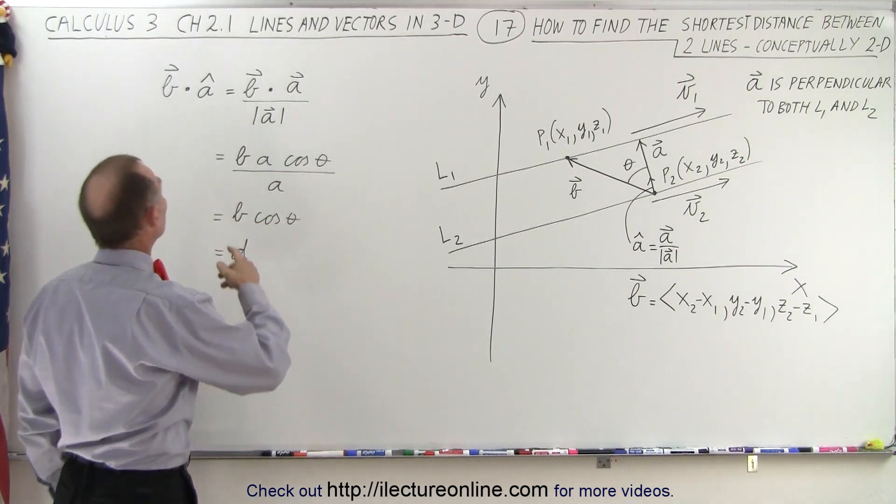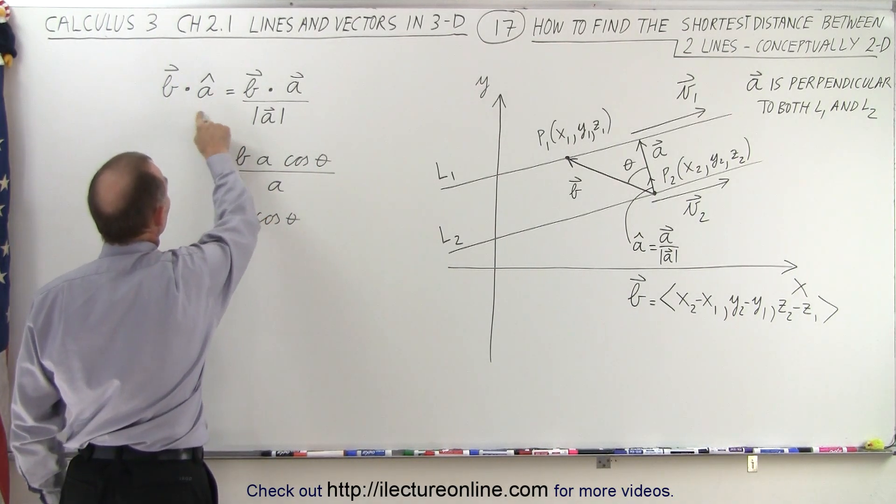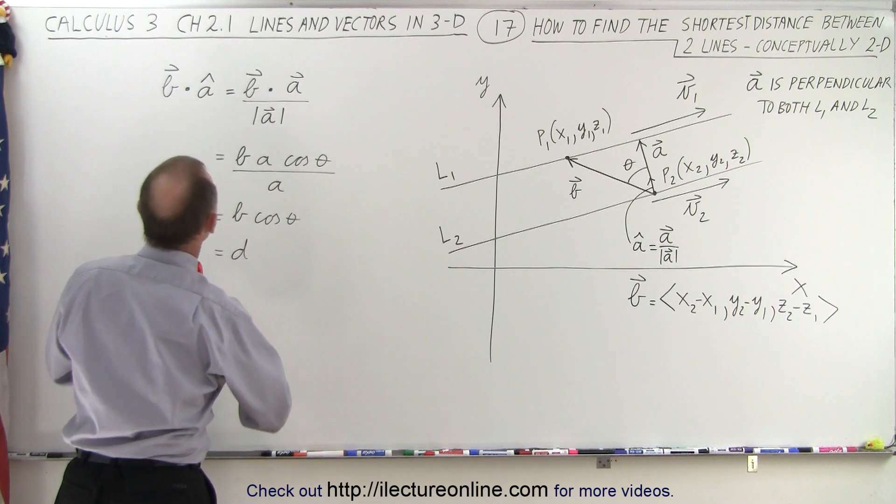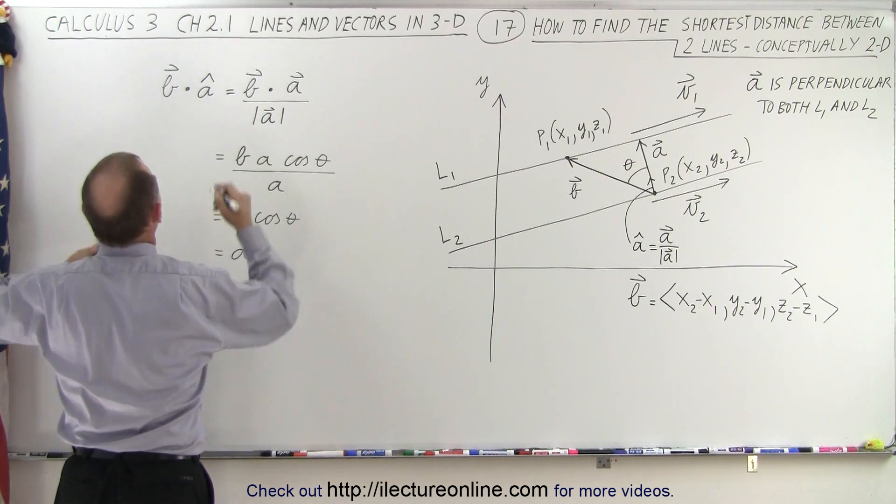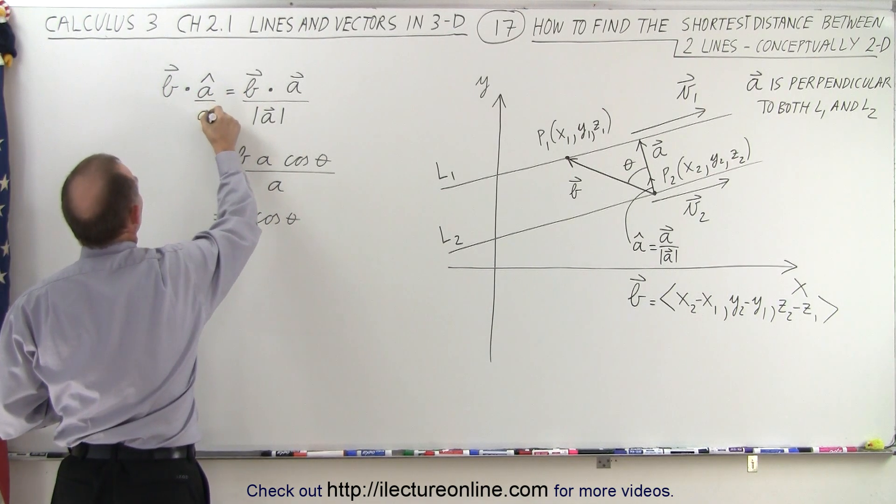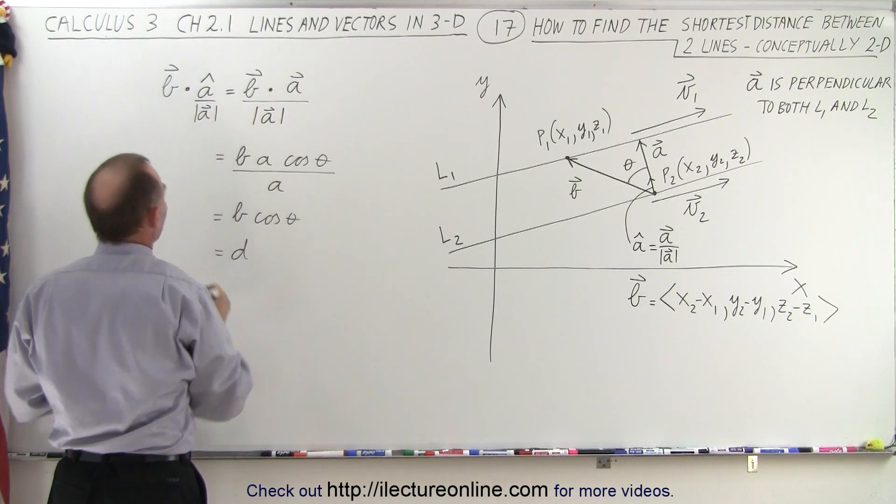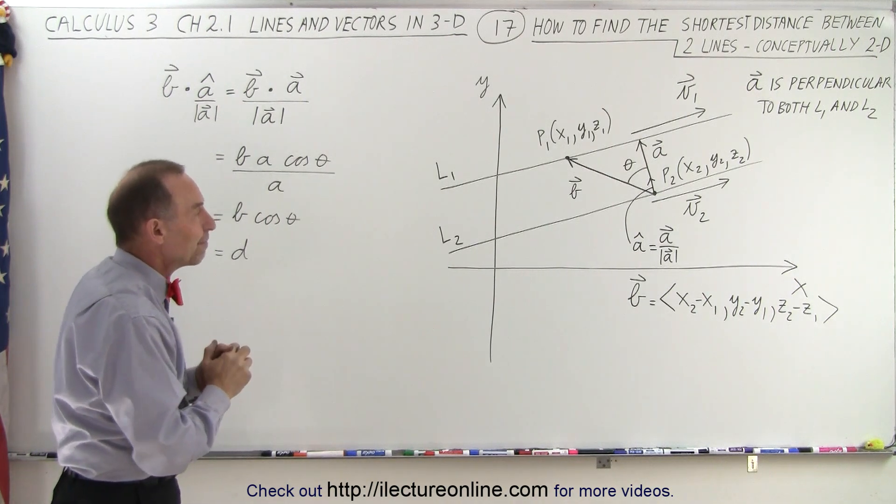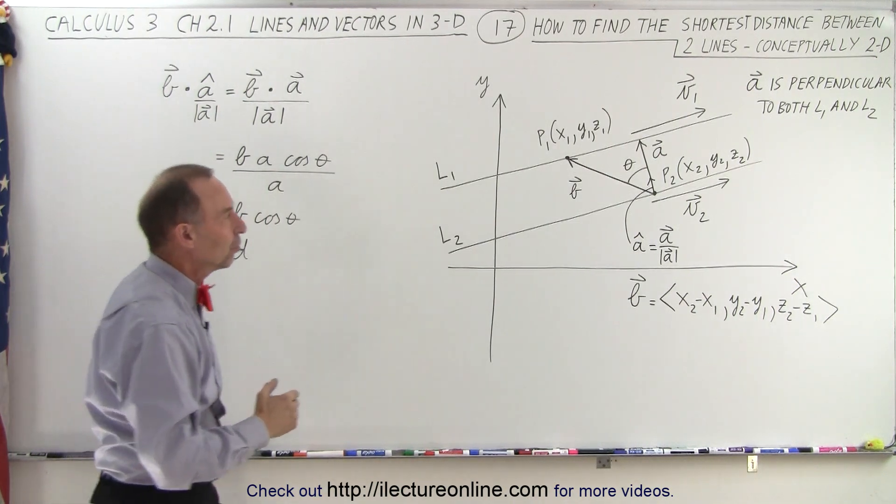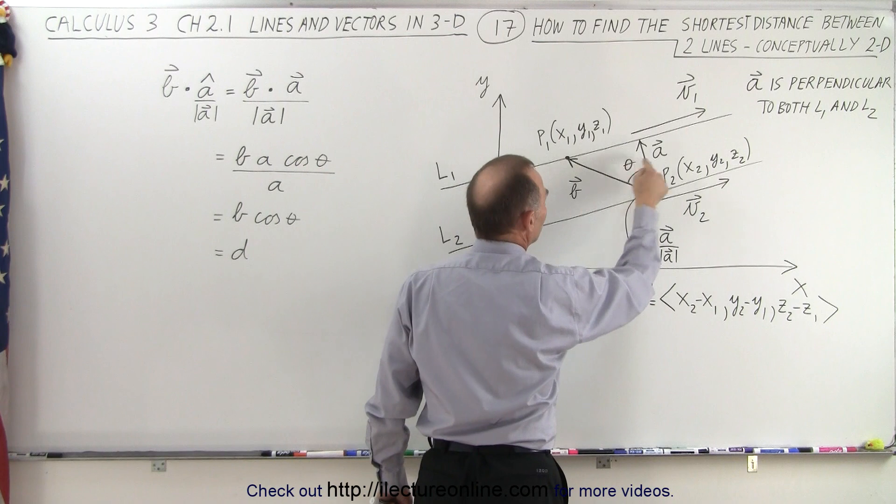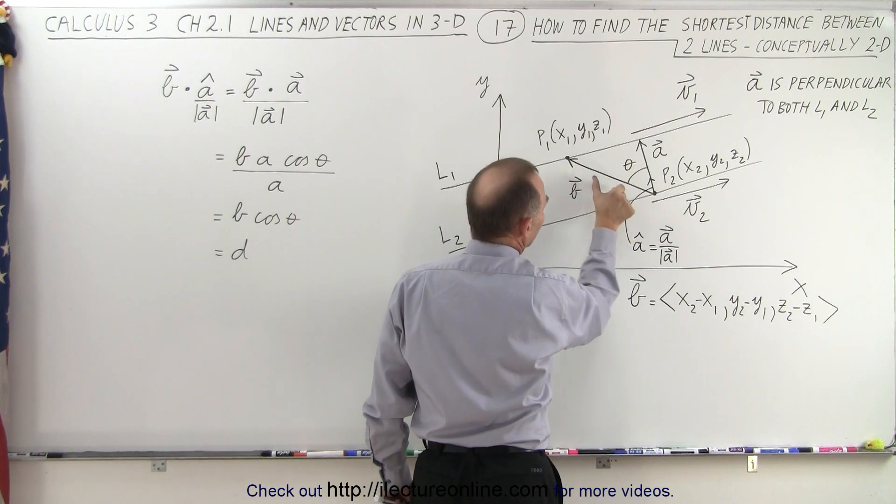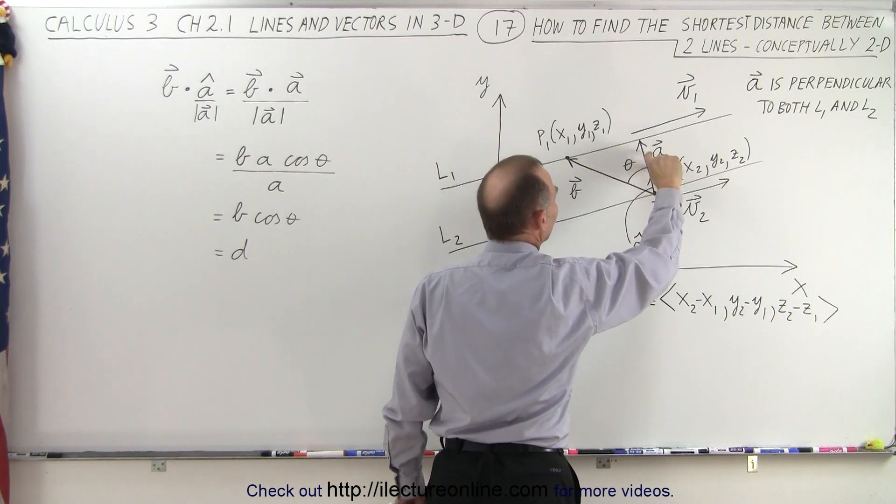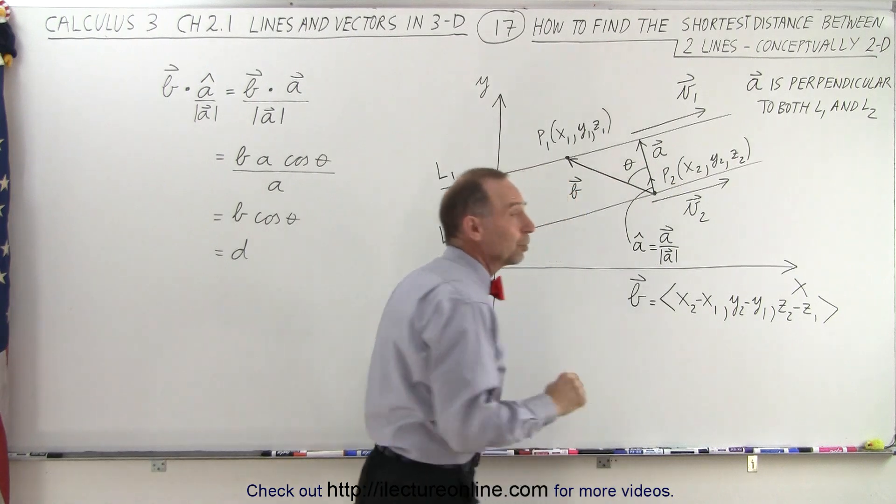Then the next thing we're going to do is we're going to take the dot product between the two, and notice what we should do here is divide that by the magnitude of A. So here we're taking the dot product of B times the unit vector of A. So what does that really mean? When we take the dot product between two vectors,